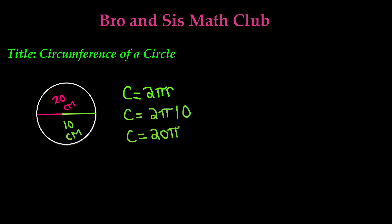Now pi is equal to 22 sevenths, or approximately 3.14. This is the value of pi you will most likely use in all cases, because 3.14 is the approximated value of pi. So you're going to multiply 3.14 times 20.